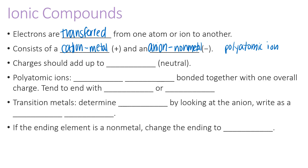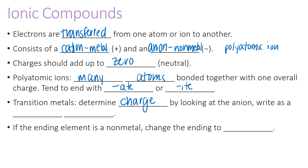When you add together the charges on an ionic compound, those charges should add up to zero. Polyatomic ions are many atoms chemically bonded together with one overall charge. They tend to end with '-ate' or '-ite.' Sometimes your metal is a transition metal, which can have more than one possible charge, so you'll need to determine the charge and include it in the name as a Roman numeral.